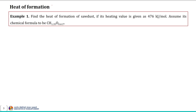Let us begin with the first example. The first example is on the heat of formation, which is also known as the heat of combustion. In this example we need to estimate the heat of formation of sawdust. The given fuel here is sawdust and its heating value is given as 476 kilo joule per mole. We need to assume the chemical formula of sawdust as given, and with this data we need to estimate the heat of formation of sawdust.